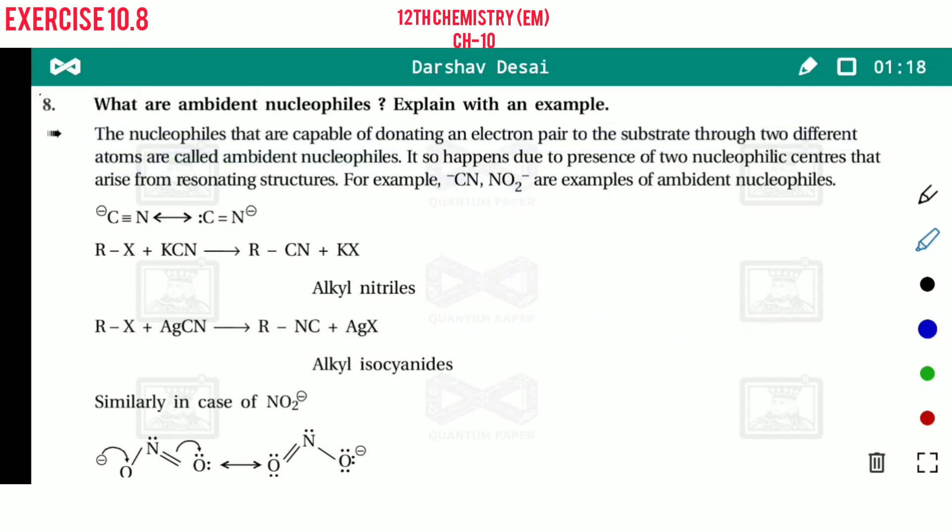Now the cyanide. If carbon acts as a nucleophile, then this cyanide product, CN product, attacks to the R, alkyl group. So product formed is R-CN. And removal option is clear: K and X, so KX.